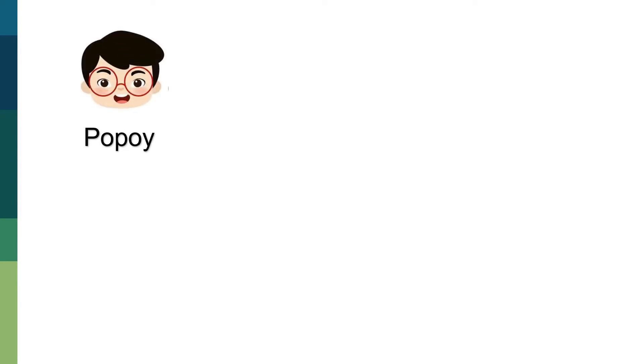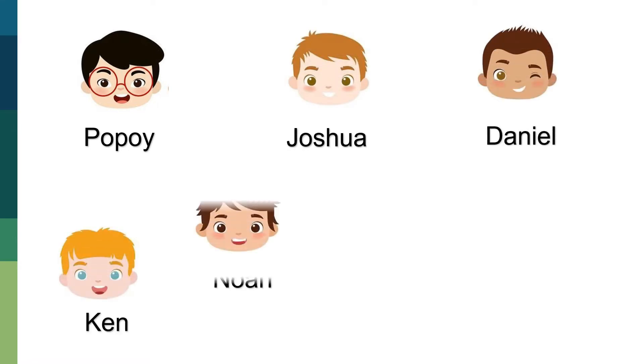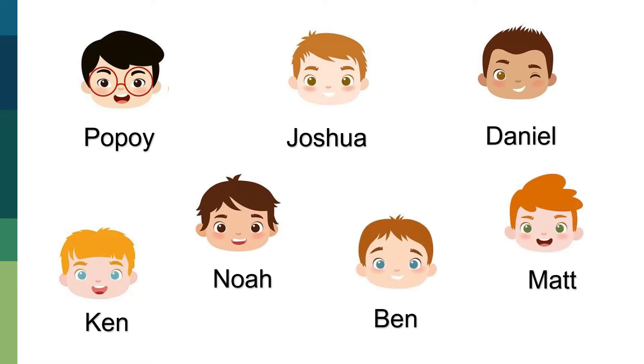Once upon a time, in a school not so far, there were seven senior boys named Popoy, Joshua, Daniel, Ken, Noah, Ben, and Matt who are looking for a date for their prom night on the 14th of February.